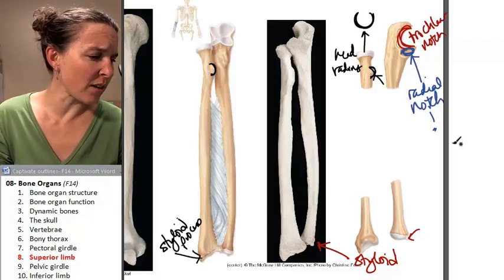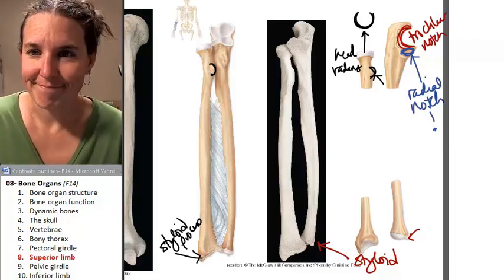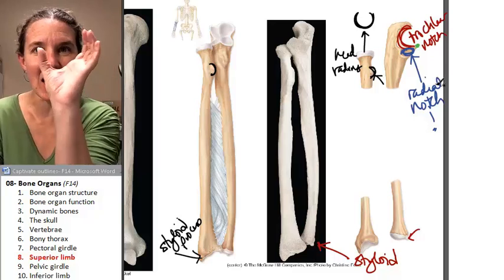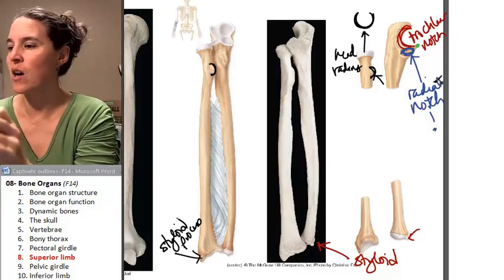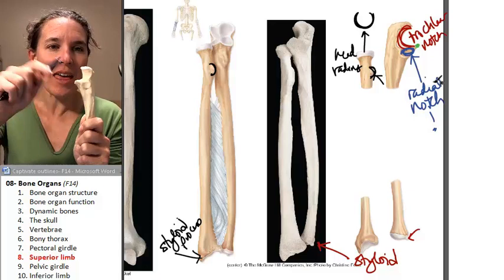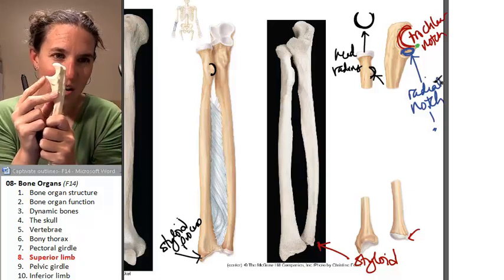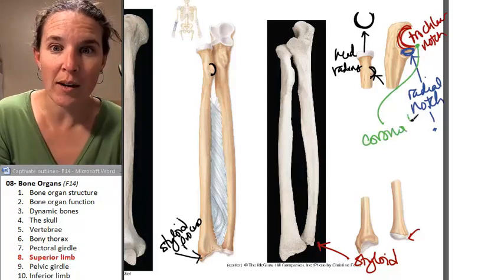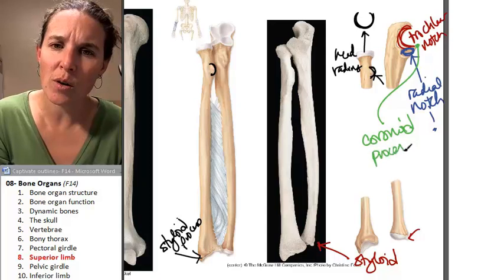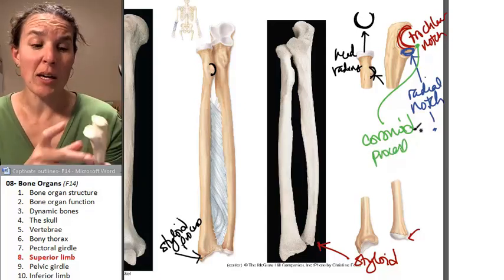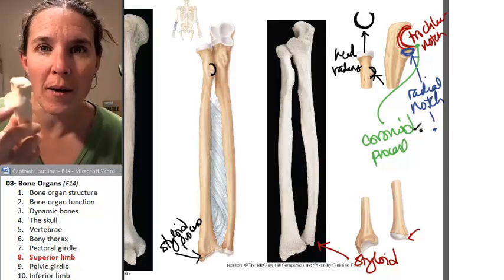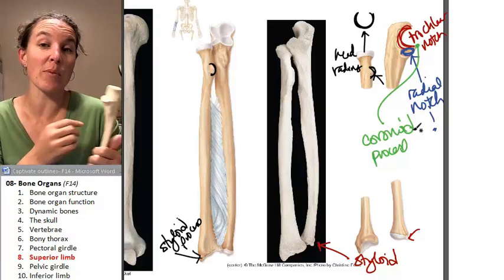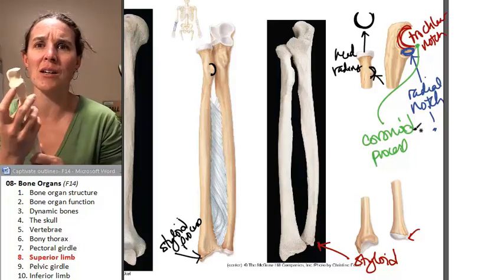You also need to know the coronoid process. The coronoid process is the tip of the trochlear notch. It's annoying because it is not the coracoid process — the coracoid process is on the scapula. The coronoid process is on the ulna.